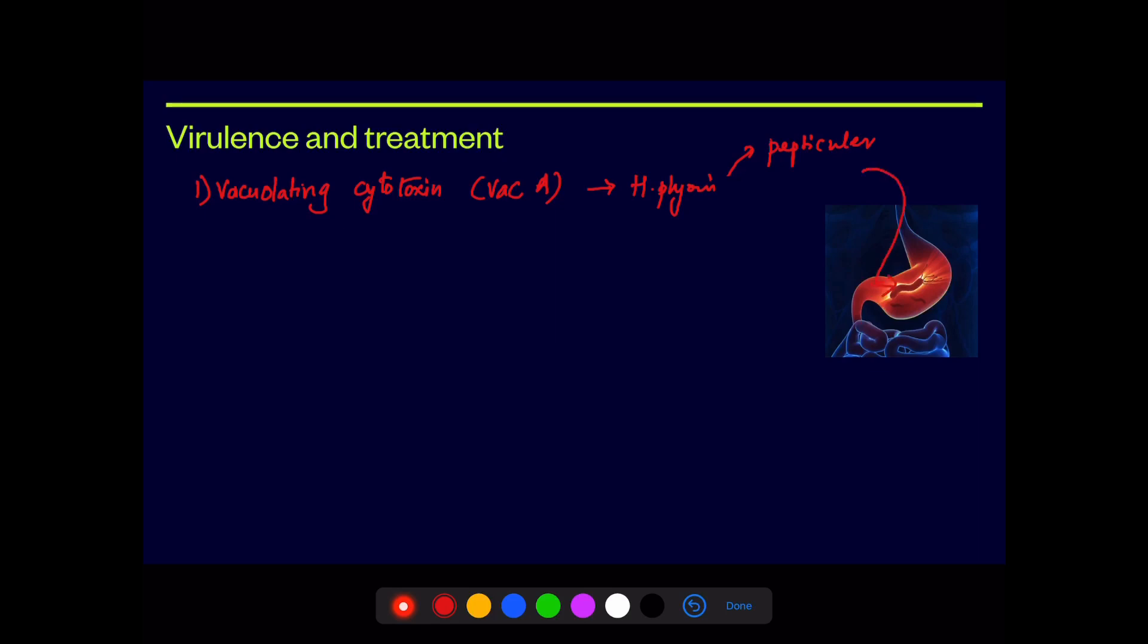This is mainly associated with causing peptic ulcer. This H. pylori is the main causative organism for causing peptic ulcer. The peptic ulcers can be either duodenal ulcers or gastric ulcers, but mostly it causes duodenal ulcers in about 80% of cases, and in only 60% of cases it causes gastric ulcer. In very few cases, it also causes atrophic gastritis and gastric adenoma.